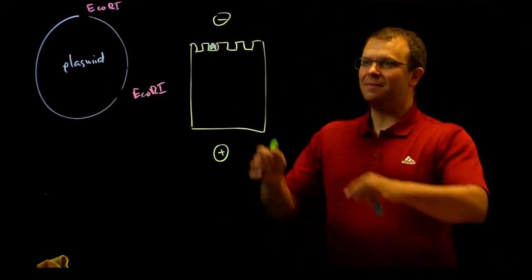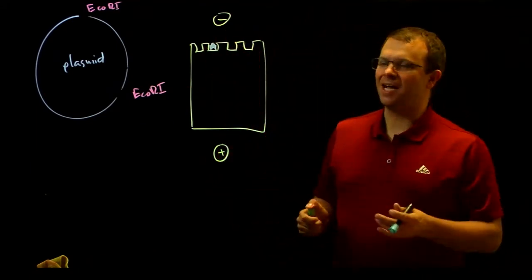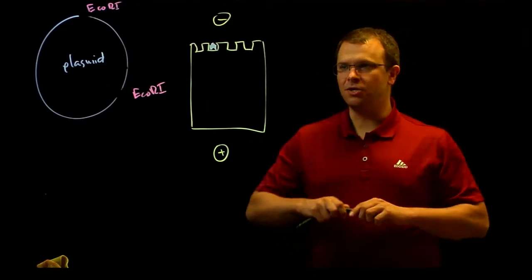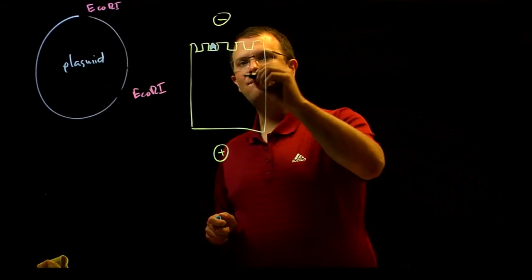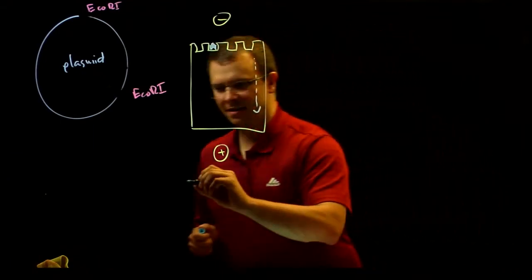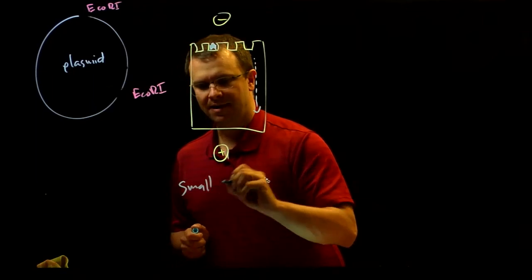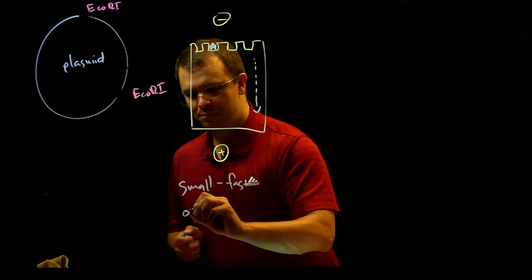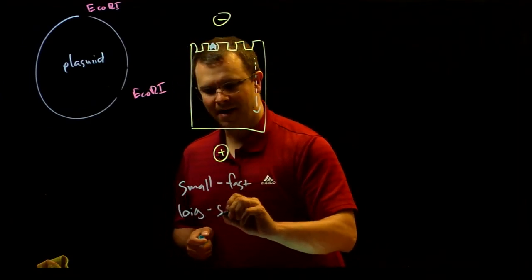The DNA will begin to migrate down the gel towards my positive electrode. And here's the important part: because the molecular structure of this gel kind of gets in the way, the smaller molecules migrate faster down the gel than the bigger ones. Small molecules migrate fast, big molecules migrate slowly.